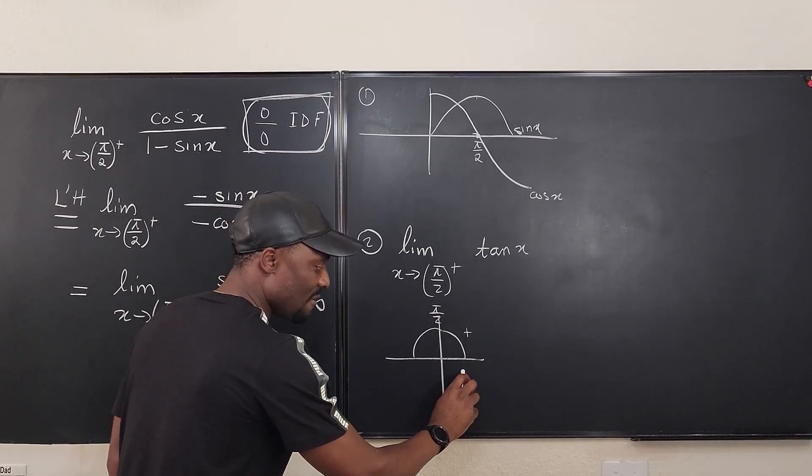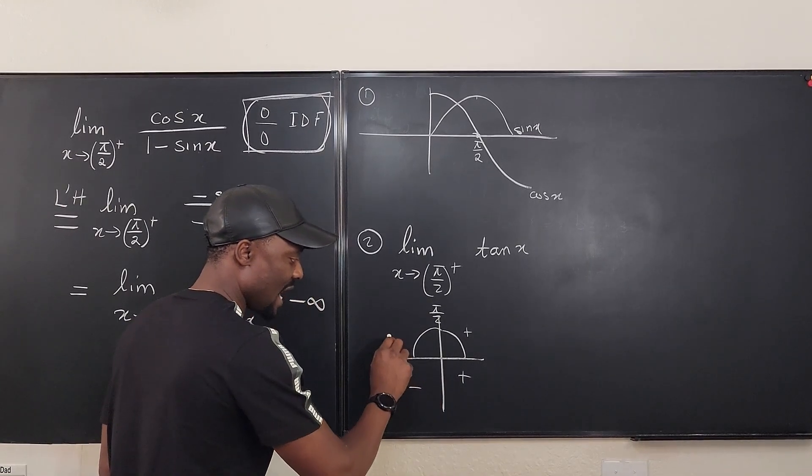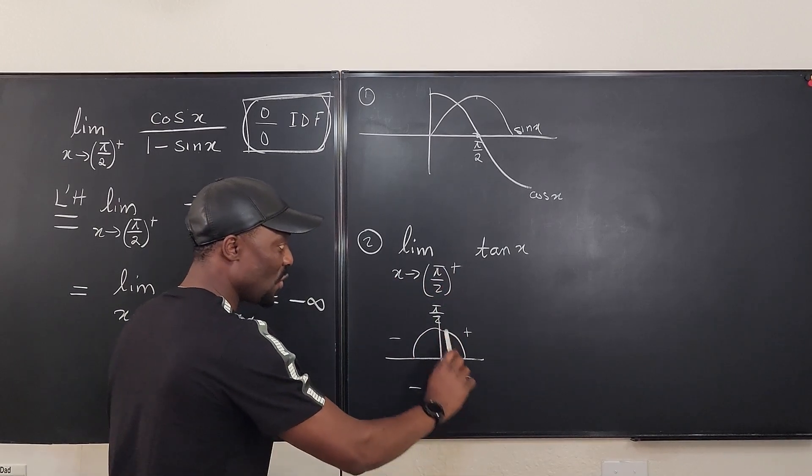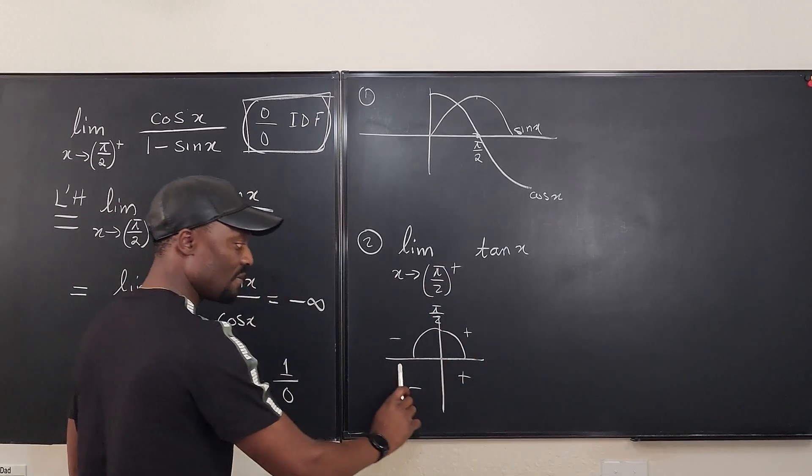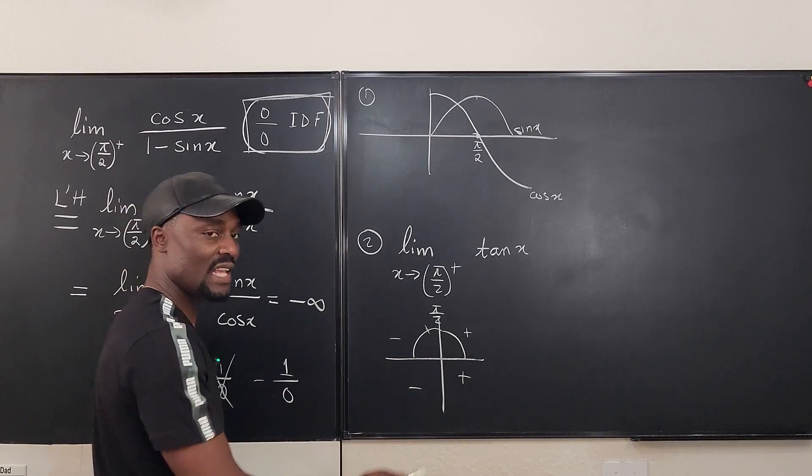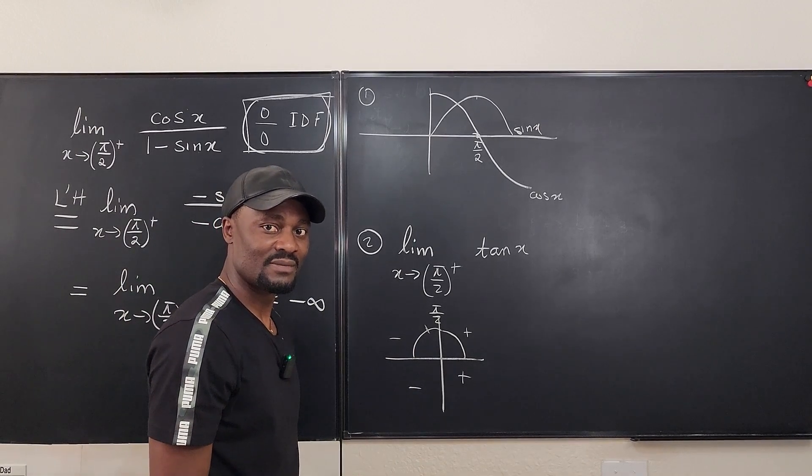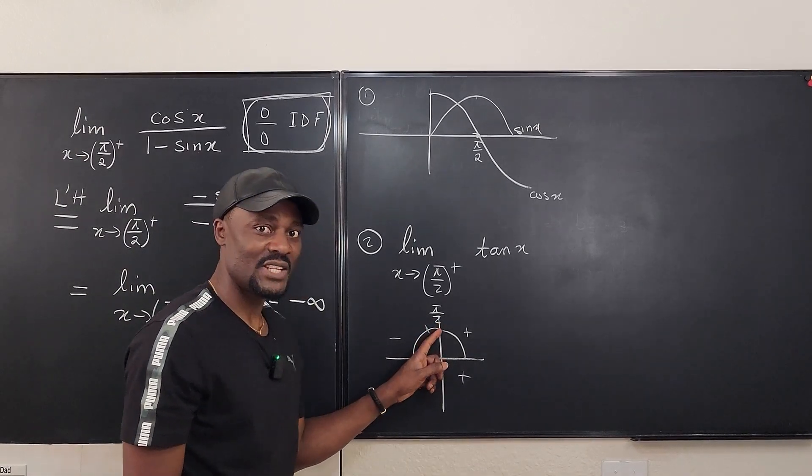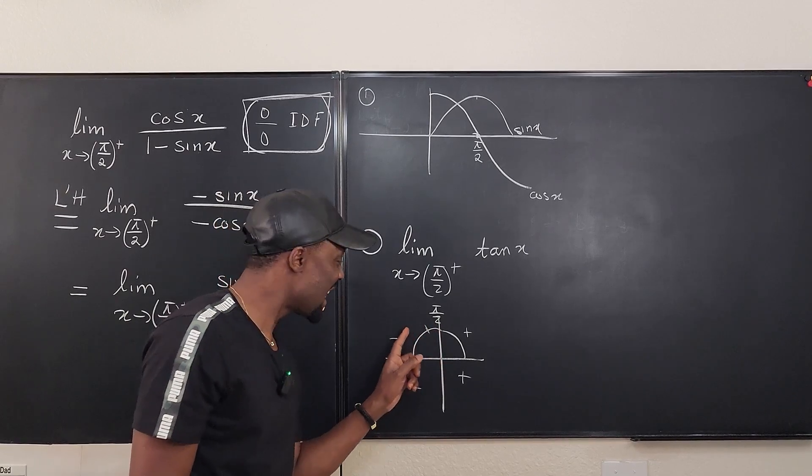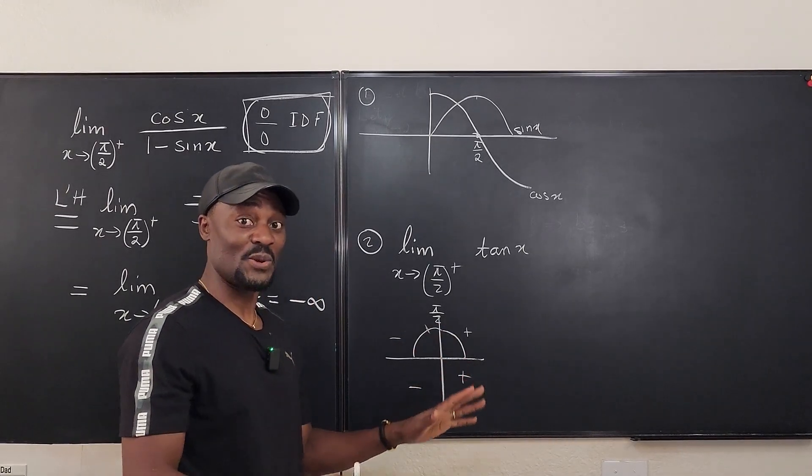But you know that tangent is positive here. Tangent is positive here. It's negative here, negative here. So as tangent is approaching pi over 2 from the right, it is coming from the negative perspective. And at pi over 2, it is undefined. So it is a negative infinity. That's another way you see it.